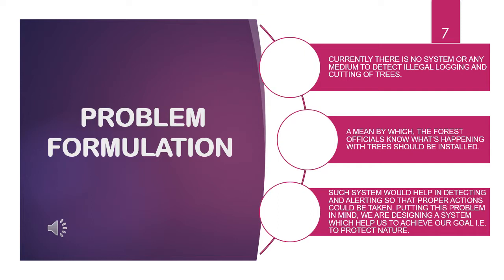Next comes the problem formulation. By studying various journals and online research, we found that currently there is no system or medium to detect illegal logging and cutting of trees. There is no means by which forest officials can know what's happening with trees. We should install a system by which forest officials can know whatever is happening in the forest — from any part of the forest — just by sitting in one place or using their Android phone. Such a system should help in detecting and alerting so that proper actions can be taken. Keeping this problem in mind, we are designing this system to protect nature.